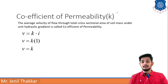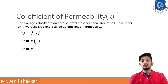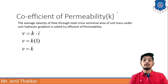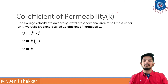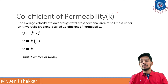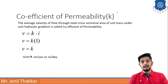When unit hydraulic gradient is considered, i equals 1, so v = k × i becomes v = k. Therefore the coefficient of permeability can be defined as velocity in that case, and its unit is centimeter per second or meter per day.